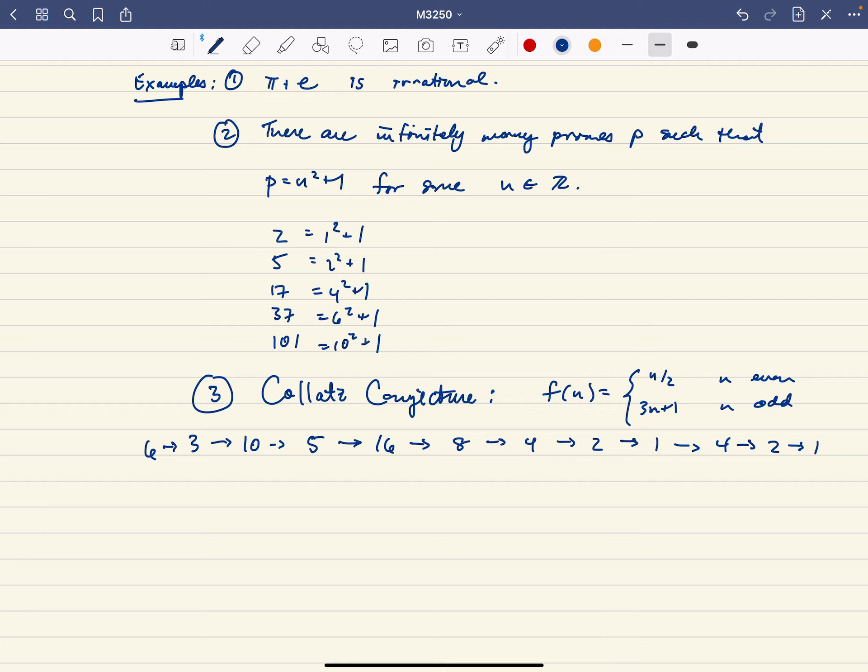So I think the smallest number that we haven't seen in this list is 7. So let's try it with 7. And 7 is odd, so we'll get 22, 11.